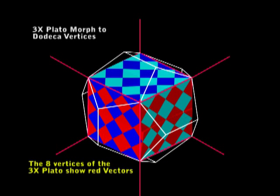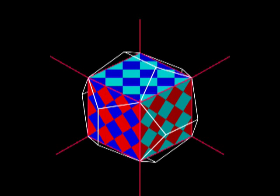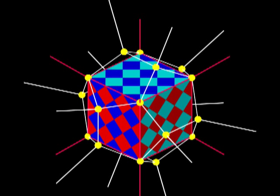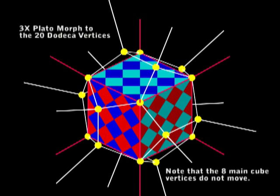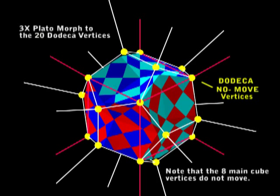This is because I found that the vertices of the dodeca and the cube are no-move vertices. In my video two years ago, Strings of Order, I called them the golden ratio vertices.